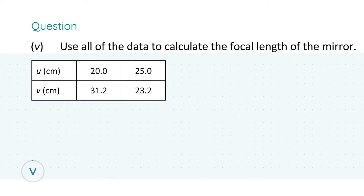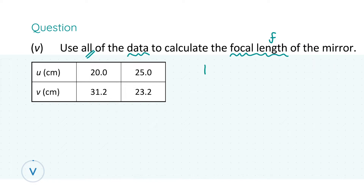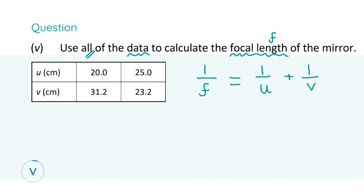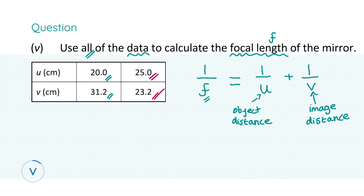Moving on to part five, we are asked to use all of the data to calculate the focal length F. The formula I'll use throughout is 1/F = 1/V + 1/U — the mirror and lens formula found on page 60 of your formula and tables book under geometric optics. We plug in each pair of U and V values to get two answers for the focal length, then find the average to reach a final conclusion.